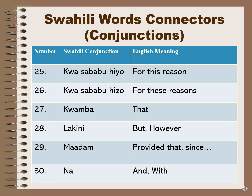Number twenty-four: 'kwa mfano' in Swahili means 'for example' in English. Number twenty-five: 'kwa sababu hiyo' is 'for this reason'; 'kwa sababu hizo' is 'for these reasons'. Number twenty-six: 'kwamba' means 'that'. Number twenty-seven: 'lakini' is 'but' or 'however'. Number twenty-eight: 'maadam' is 'provided that' or 'since'. Number thirty: 'na' means 'and' or 'with'.